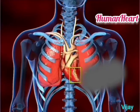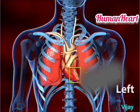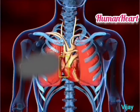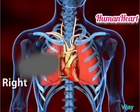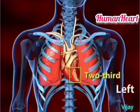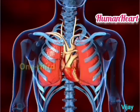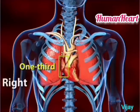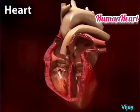The heart is located above the diaphragm. The diaphragm is a thin layer that separates the thoracic cavity from the abdominal cavity. Two thirds of the heart is occupied on the left side, and one third on the right side.